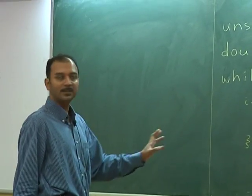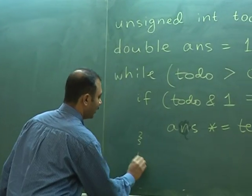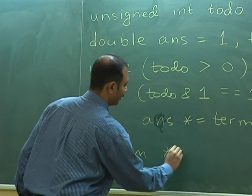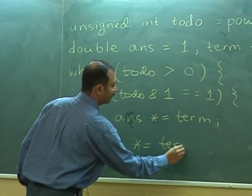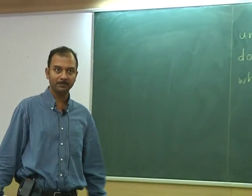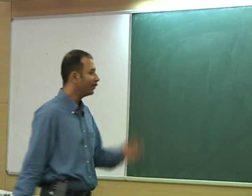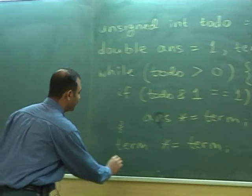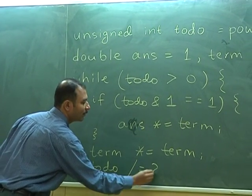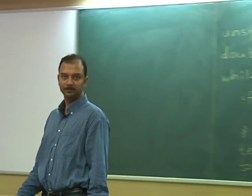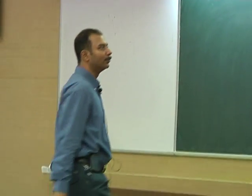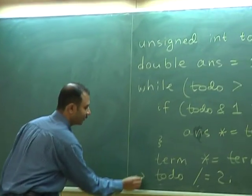The if ends without an else clause, then we double term — 'term *= term' — and shift todo, which we can also write as 'todo /= 2' to halve todo, then end the loop body.